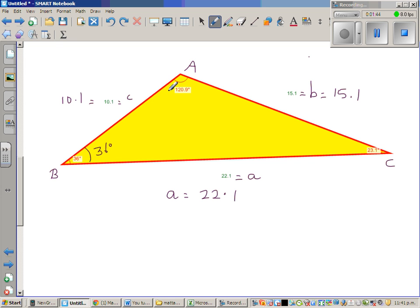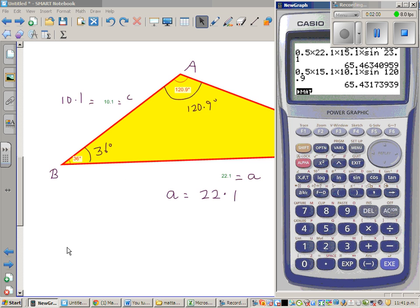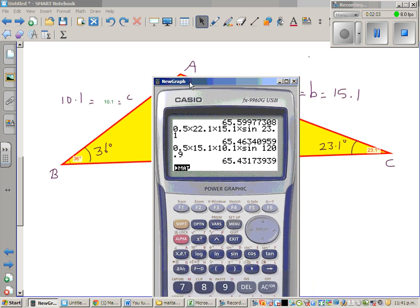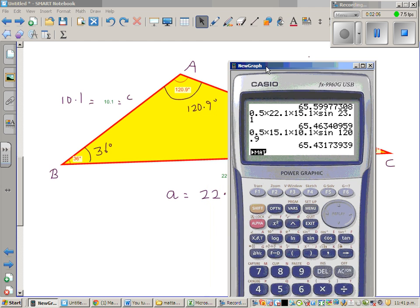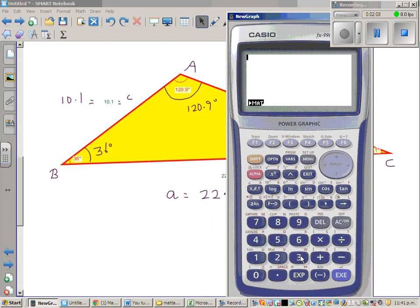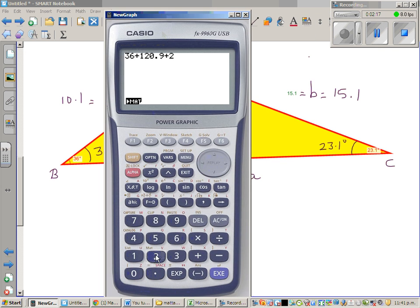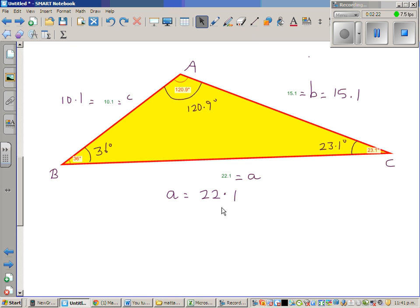This is 36 degrees. This is 120.9. I used a program to find the angles, interior angles of this triangle. Hopefully, they have done it right. And this is 23.1. Let me check. I've got a doubt whether these three angles add up to 360. This is 36 plus 120.9 plus 23.1. Hopefully, yeah, exactly. It's 180. So, there's nothing wrong here.